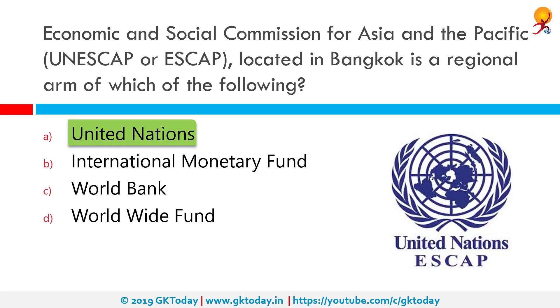The Economic and Social Commission for Asia and the Pacific (UNESCAP) is located in Bangkok and is a regional commission of which of the following? The correct answer is the United Nations. This body is one of the five regional commissions under the jurisdiction of the United Nations Economic and Social Council.